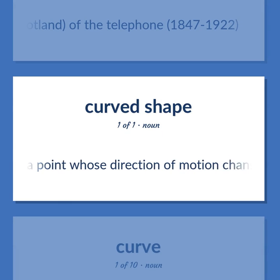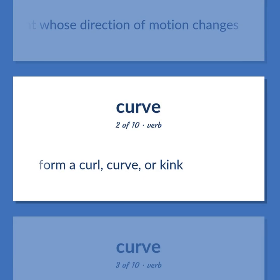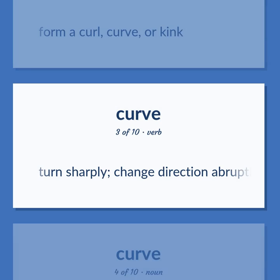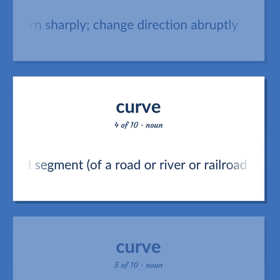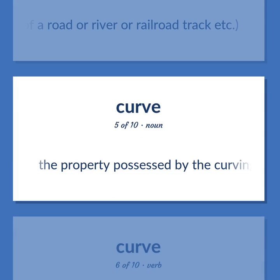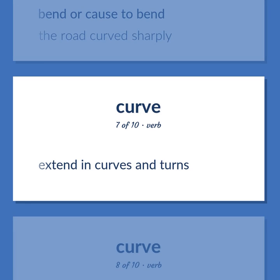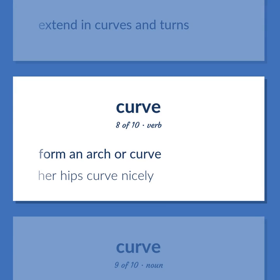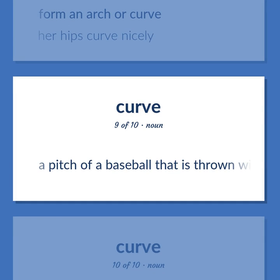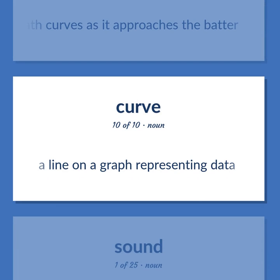The trace of a point whose direction of motion changes. Form a curl, curve, or kink. Turn sharply — change direction abruptly. Curved segment of a road or river or railroad track etc. The property possessed by the curving of a line or surface. Bend or cause to bend — the road curved sharply. Extend in curves and turns. Form an arch or curve — her hips curve nicely. A pitch of a baseball that is thrown with spin so that its path curves as it approaches the batter. A line on a graph representing data.